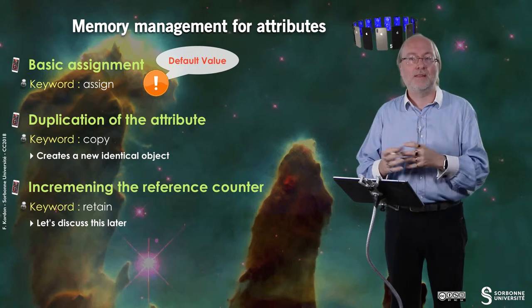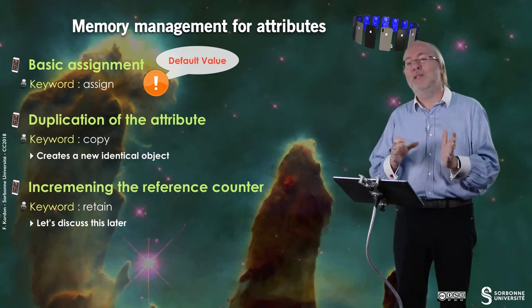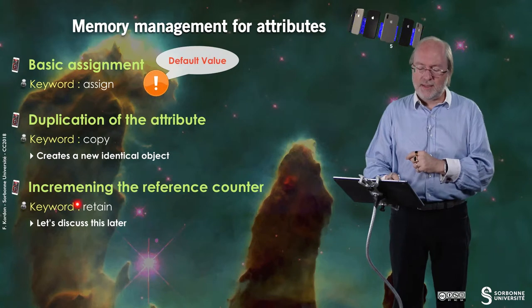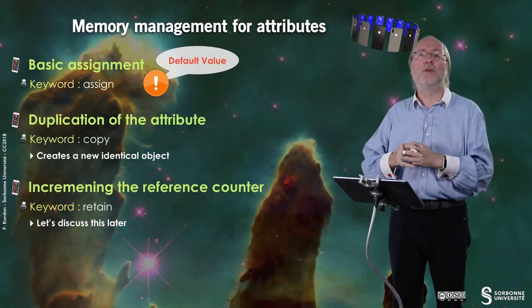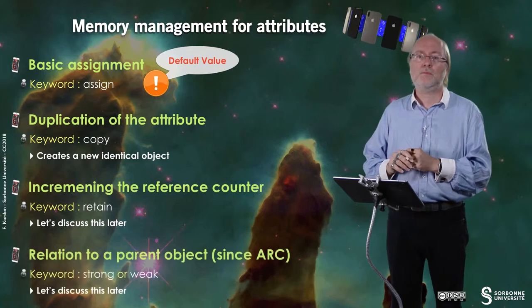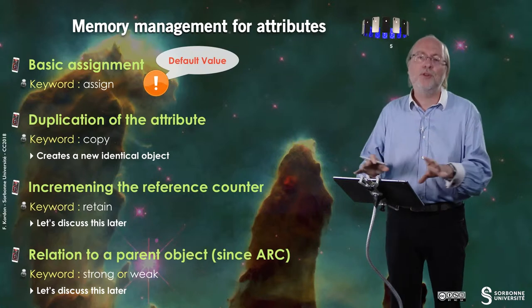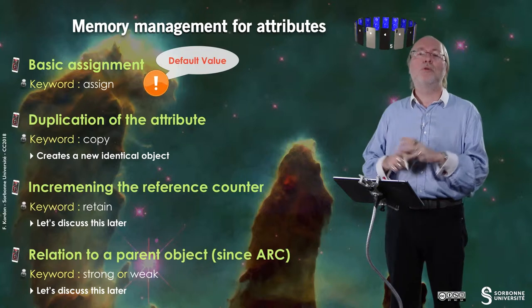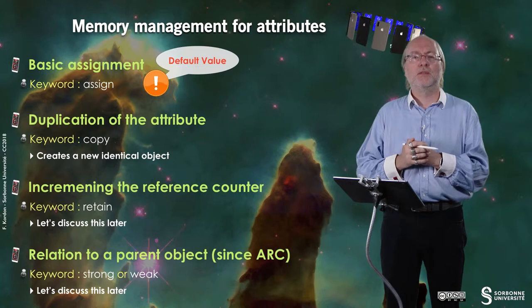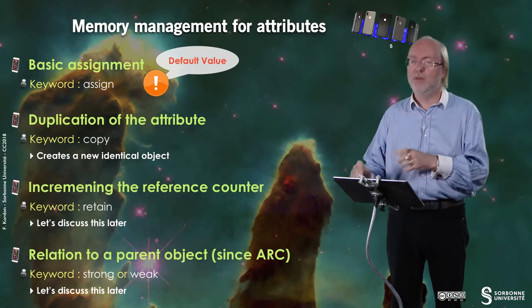The last way to handle memory management — and I will go deeper in another video — is 'retain'. Retain has an impact on a counter associated with each object, called the reference counter, which shows how many entities share the ownership of the object. It preserves the life of the object in the application. This was introduced with ARC, so we won't deal with it very much in Objective-C. On Swift, we will go deeper into these characteristics. You also have 'strong' and 'weak', which are variants of retain — but we will discuss those later in another video when we deal with Swift.